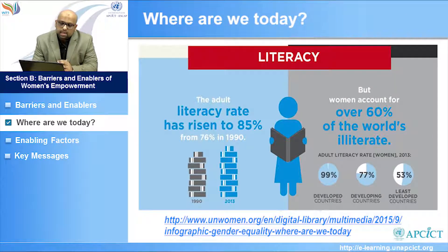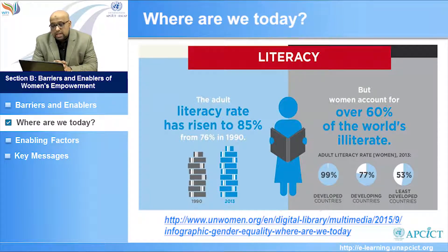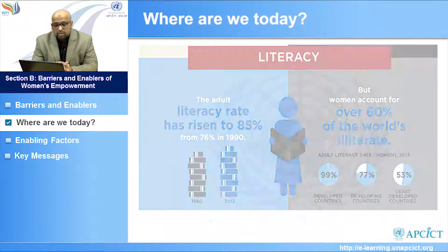The first area we look into is literacy. When it comes to adult literacy, since 1990 it has risen globally to 85%, which is a good start. But at the same time, over 60% of the world's illiterate population is represented by women — a serious problem we need to work to solve.